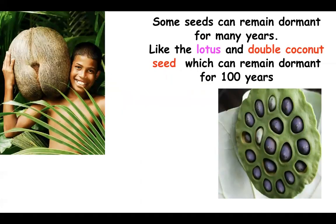There are certain seeds which can remain dormant for a very long time. For example, lotus — the national flower of India — its seeds can remain dormant for over 100 years. The double coconut, the largest seed in the plant kingdom, can remain dormant for 60 to 100 years. So there are examples of seeds which can display a very large period of dormancy.